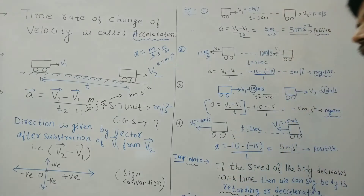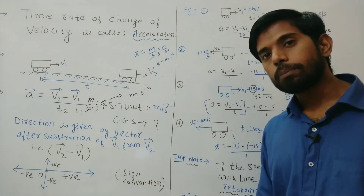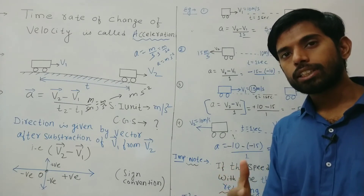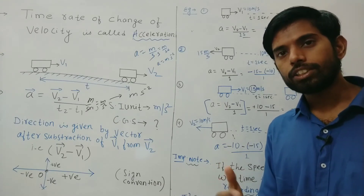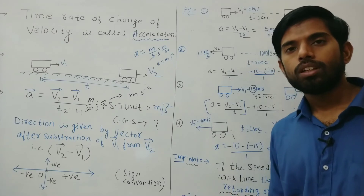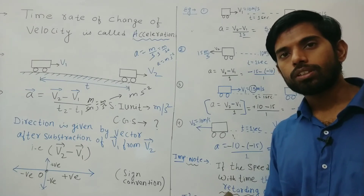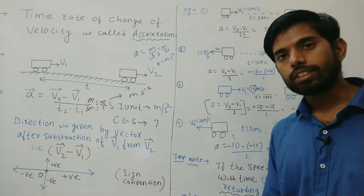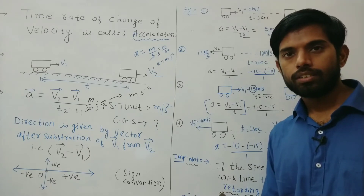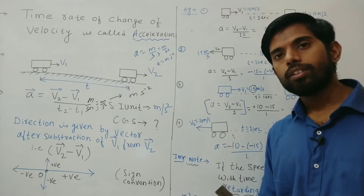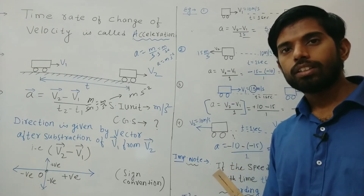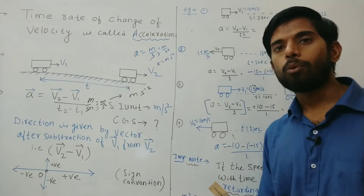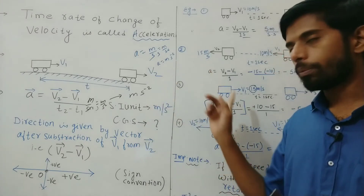In simple words: if speed increases during motion with respect to time, we can say the body is accelerating. And if speed decreases during motion, then we can say the body is retarding. Copy all of this down.